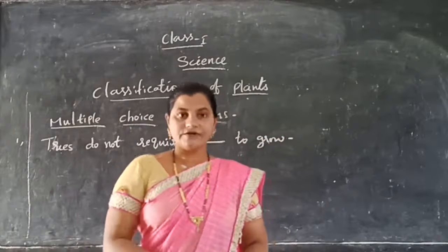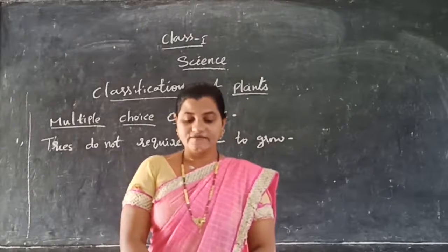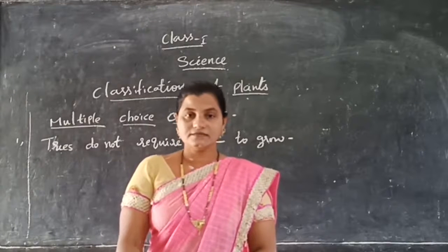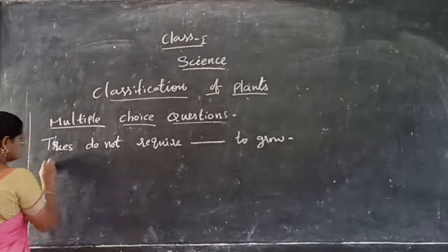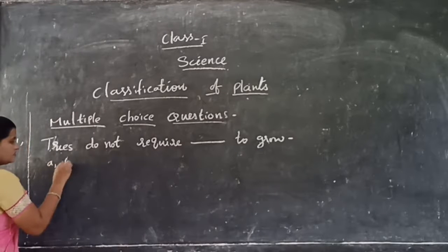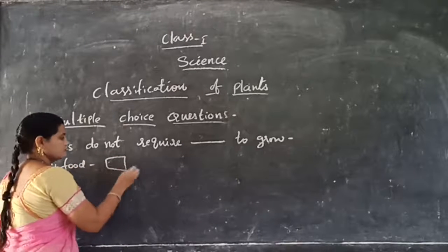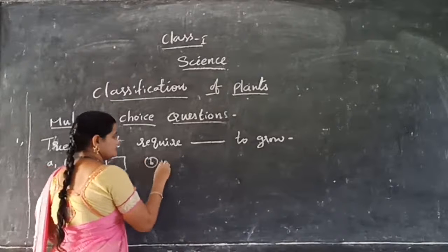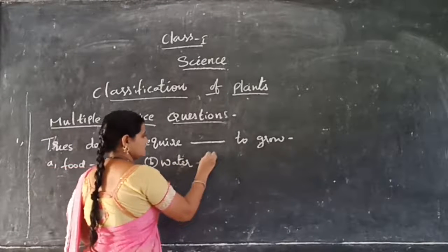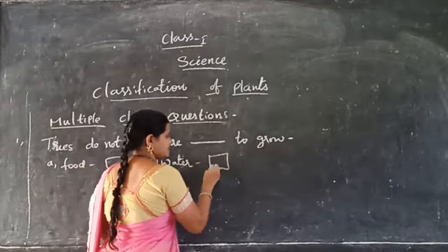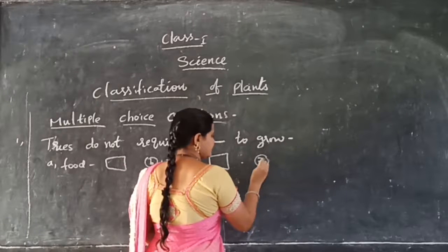Options are also given to us. What are the options? First option: A — Food. Second option: Water. And the third option is Sunlight.